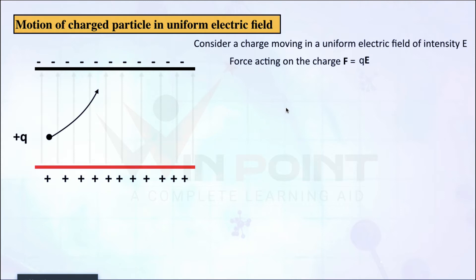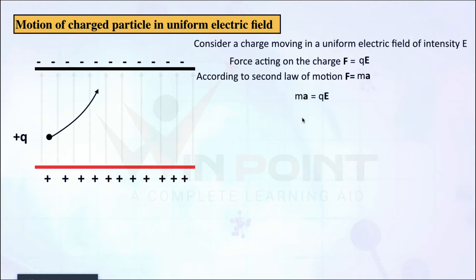According to the second law of motion, F equal to MA. Both are force, so we can compare them. When we compare, we get MA equal to Q into E. From here, we can make an equation for acceleration: A equal to QE by M. This equation is very important and we are going to use it in problems.